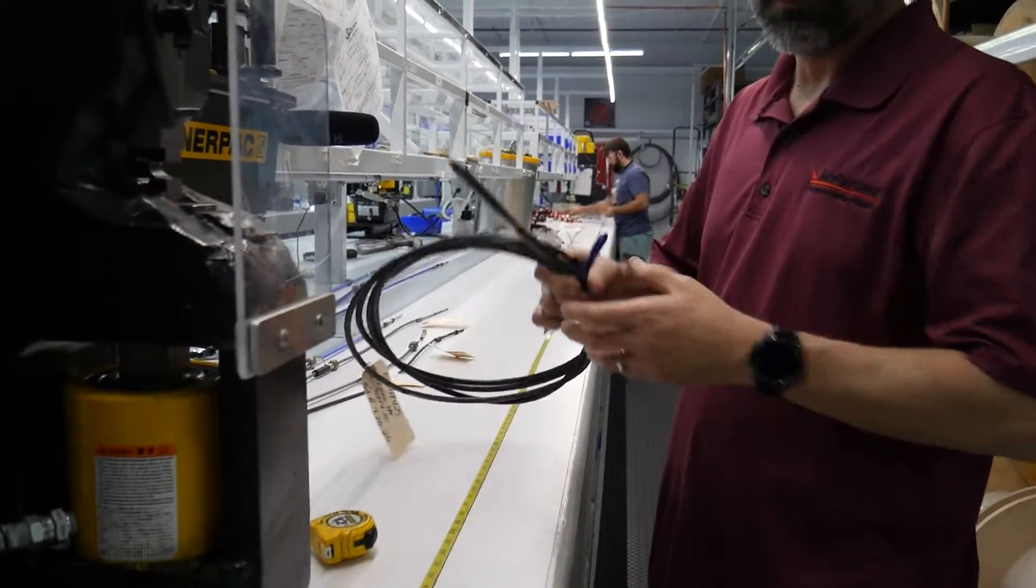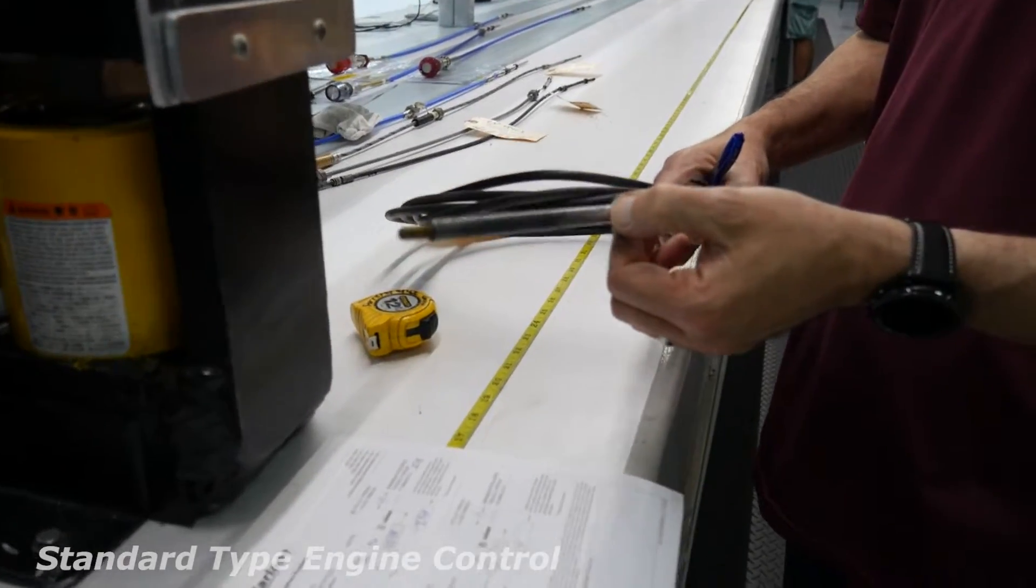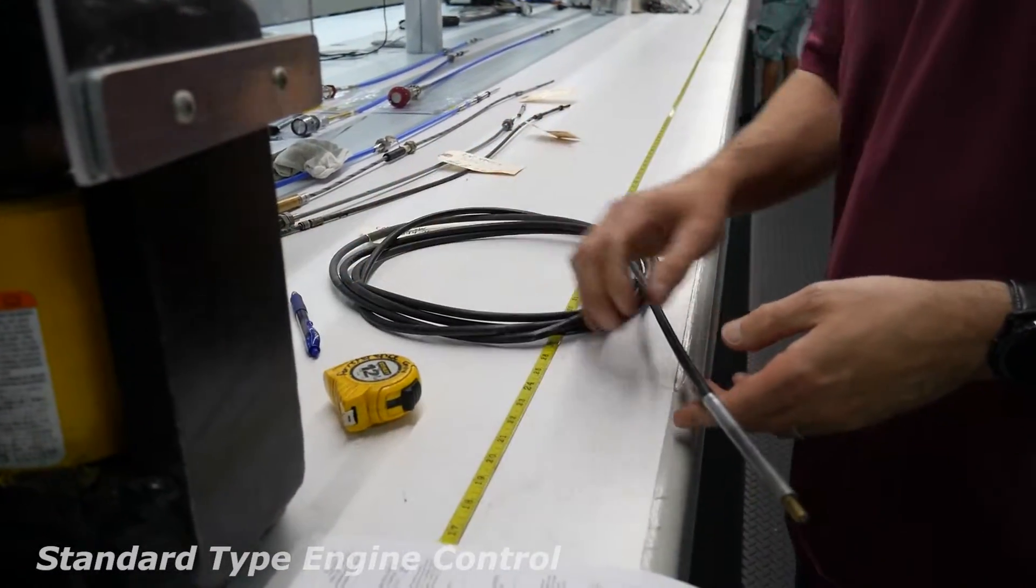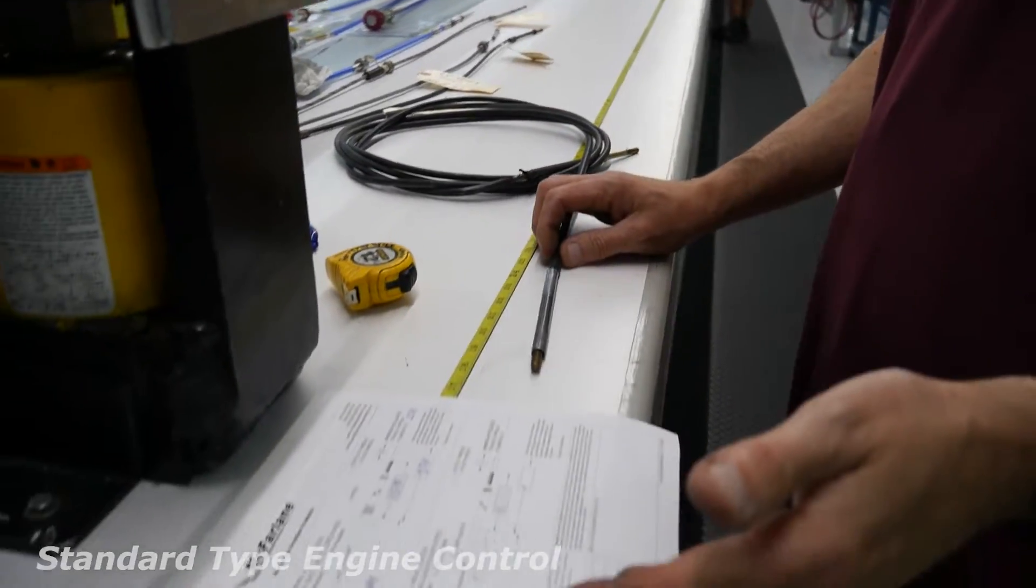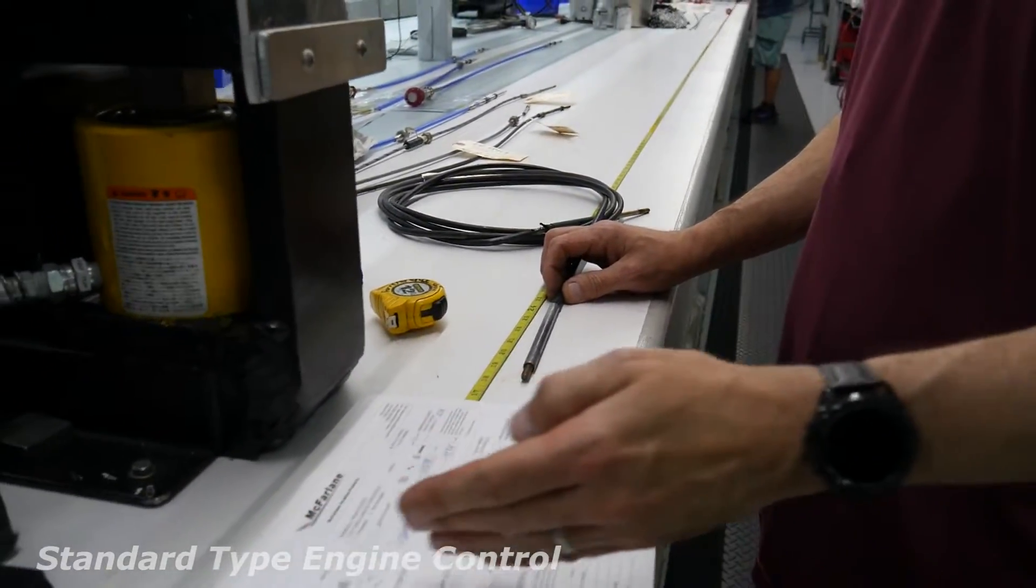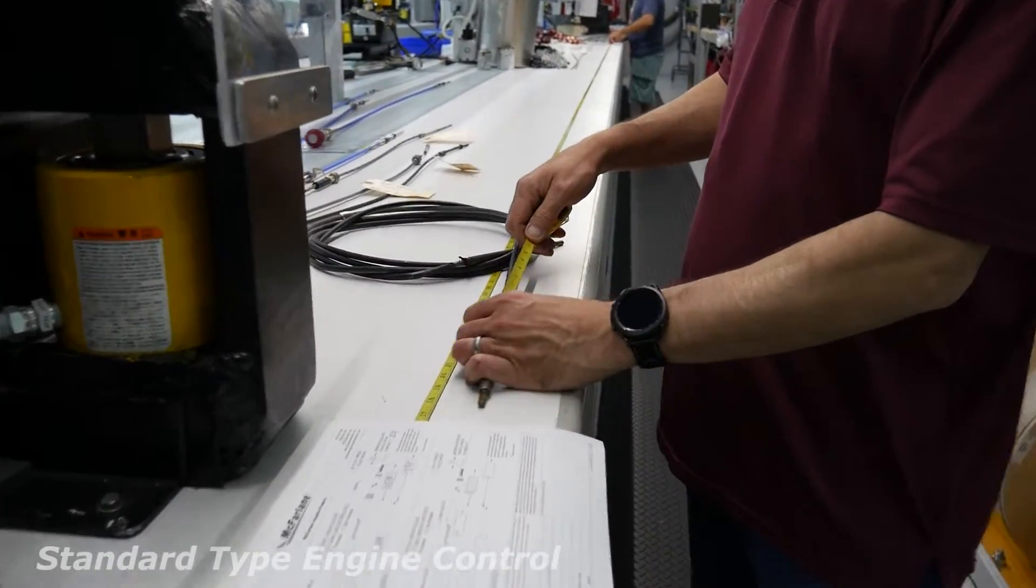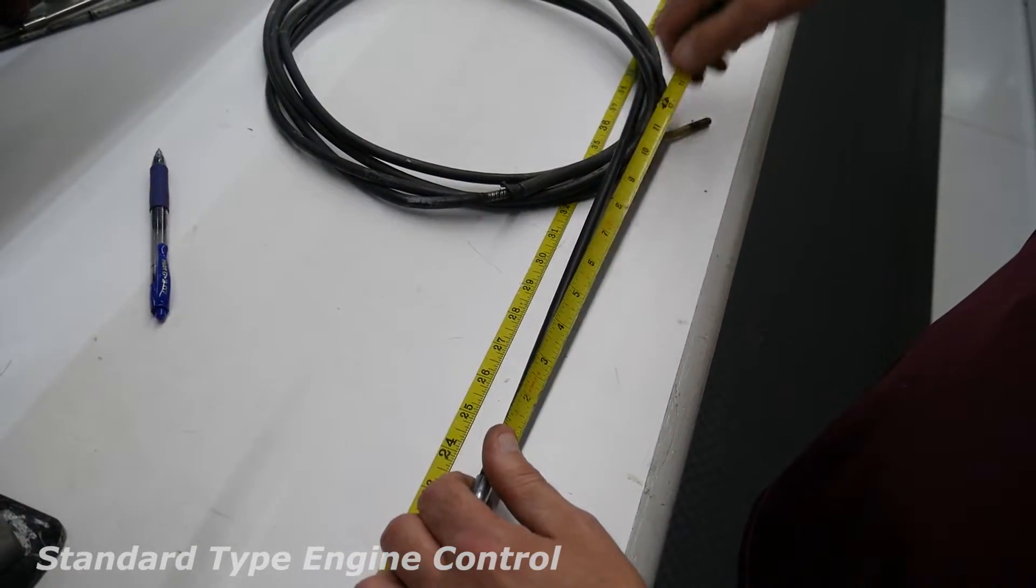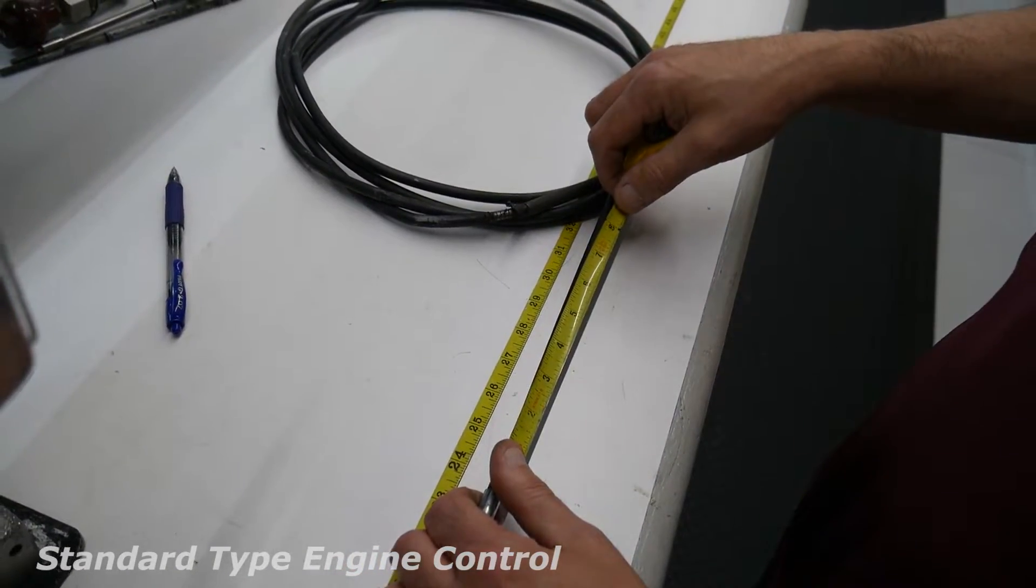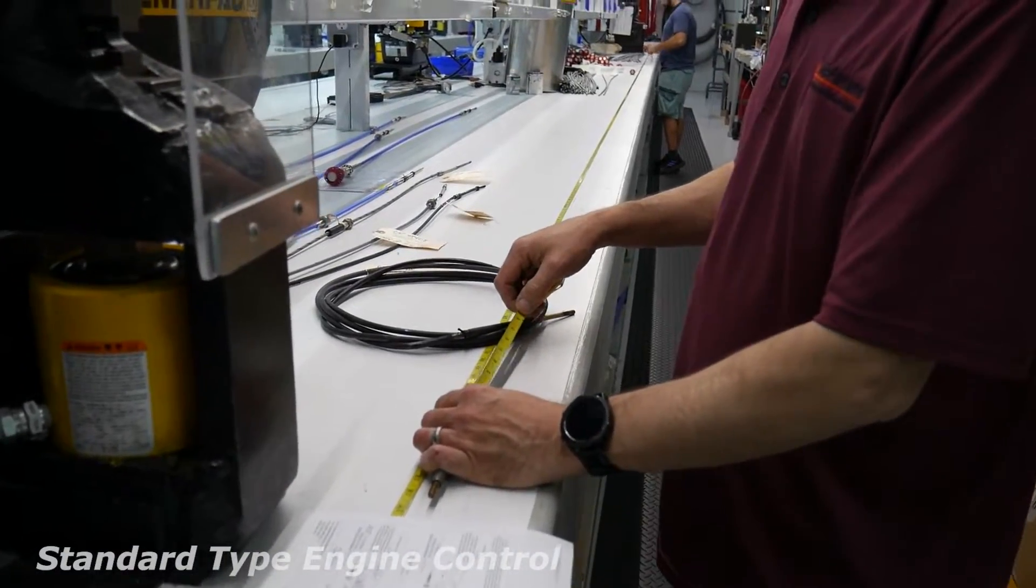And then we have a version without a swivel that we call a standard version. And it is measured the same way. It doesn't have a swivel, so rather than measuring from a swivel, you would start from here and then measure the length of the control. This is 150 inches, so I might be able to measure it with the tape measure.